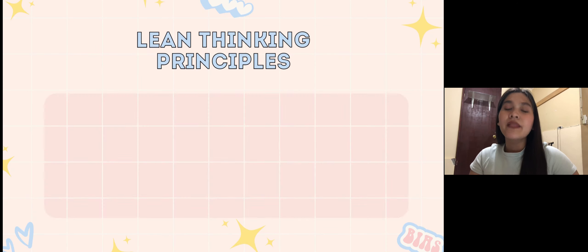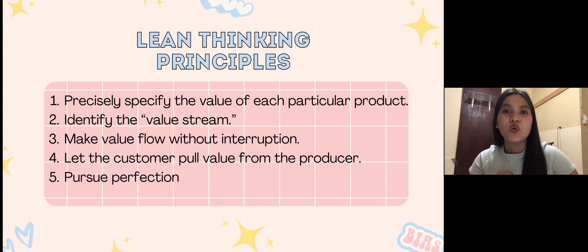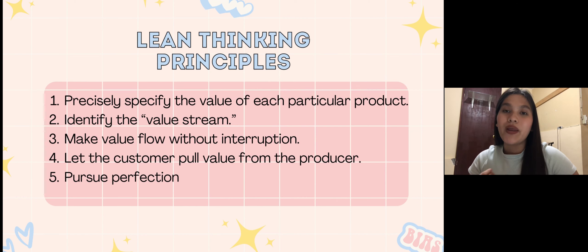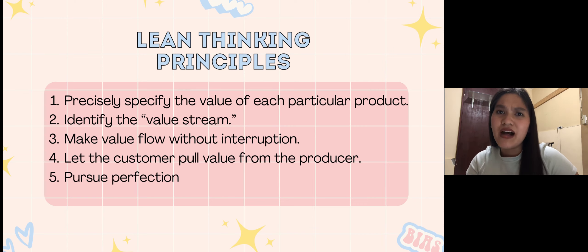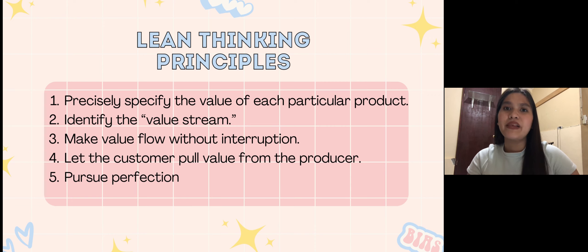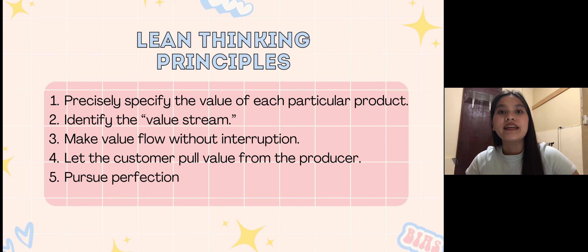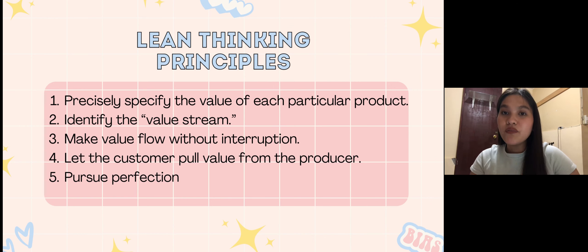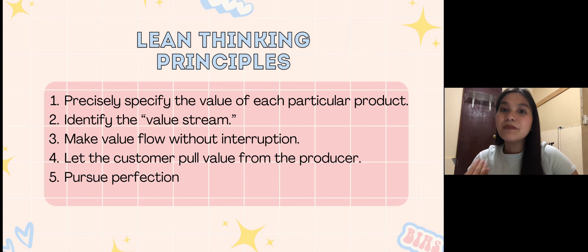Moving on to lean thinking — it is a framework that aims to provide a new way to think about organizing human activities to deliver more benefits to society and to value individuals who are eliminating waste. There are five principles: first, precisely specify the value of each particular product; second, identify the value stream; third, make value flow without interruption; fourth, let the customer pull value from the producer; and fifth, pursue perfection. Lean thinking aims to create a lean culture that sustains growth by aligning customer satisfaction with employee satisfaction, offering innovative products or services profitably while minimizing unnecessary costs to customers, suppliers, and the environment.